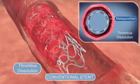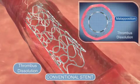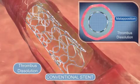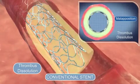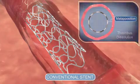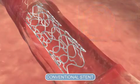And finally, as thrombus dissolves over time, the gap between the struts and the wall becomes even larger, and hence increases the stent's malapposition.